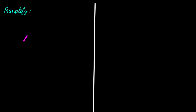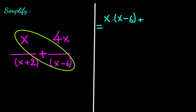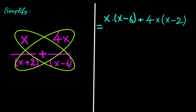Our next example is x divided by (x plus 2) plus 4x divided by (x minus 6). Let's multiply x with (x minus 6), then multiply 4x with (x plus 2), divided by the product of the denominators.